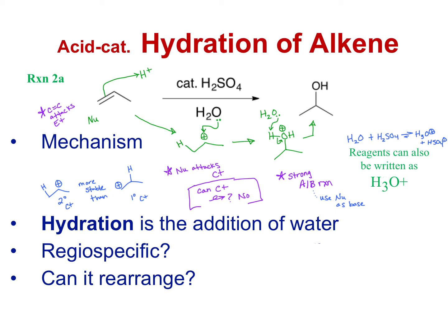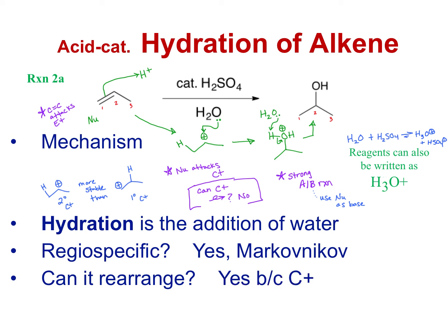Before we move on, let's summarize. This reaction is regio-specific, meaning there's a preference for where the OH goes. You don't get a product where it's on carbon 1 — it's only going to show up on carbon 2. So the regio-specificity in this case gives us the Markovnikov product. Can this reaction rearrange? Yes, because it has a carbocation. By definition, anything with a carbocation is going to be able to rearrange because carbocations are not super stable.